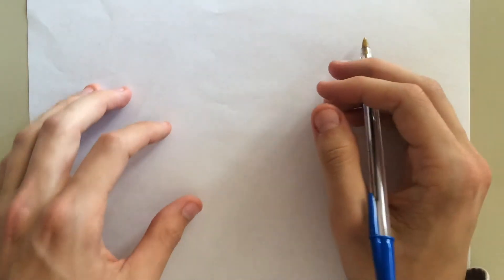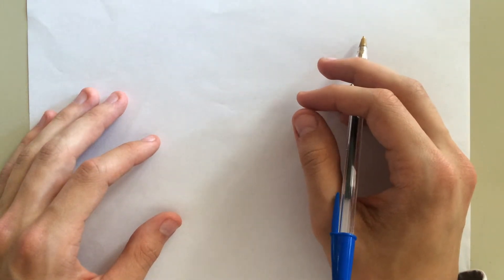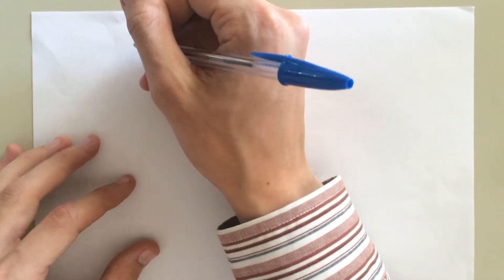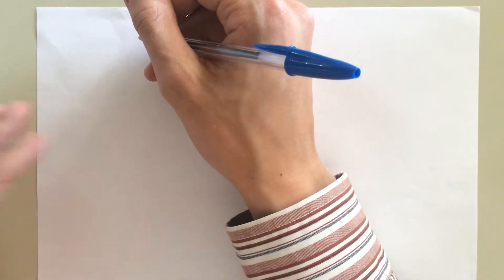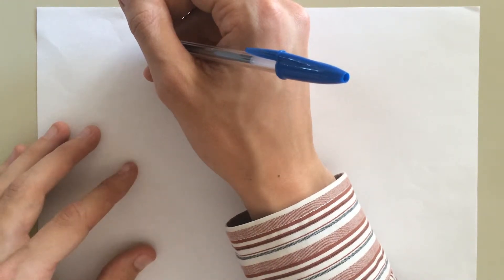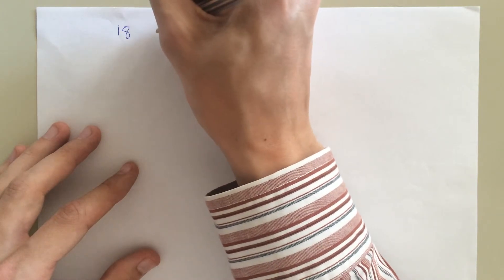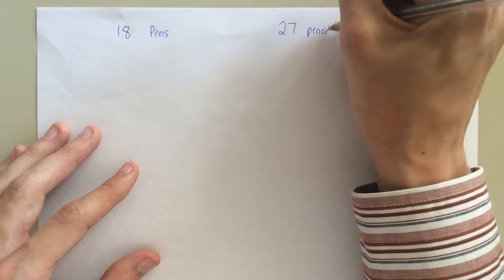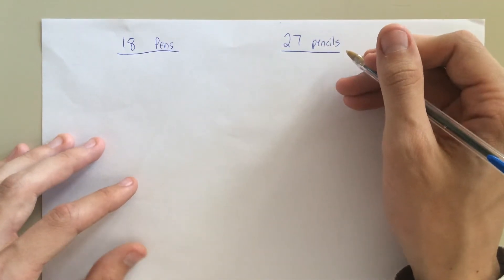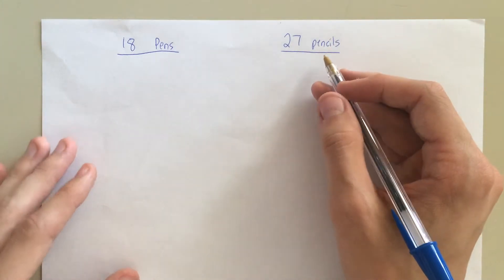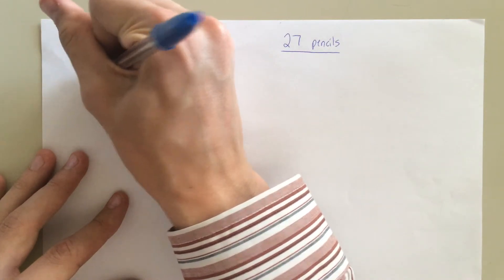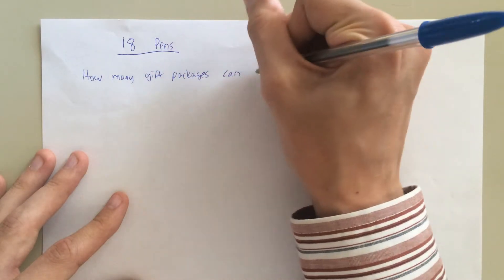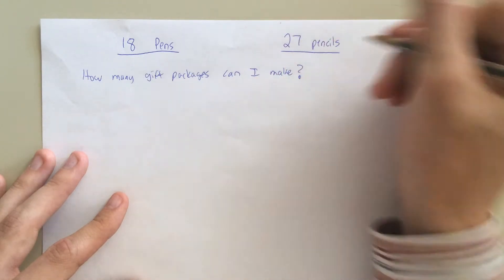Okay, so in this example, what I'm going to be doing is I'm just looking around the room here, how about pens and pencils? We're making gift packages to students, and we're using pens and pencils. And so let's say we have 18 pens, and we have 27 pencils. And I'm just coming up with this one on the fly, so hopefully this works out. But we've got 18 pens and 27 pencils, and I want to know how many gift packages can I make with these supplies?